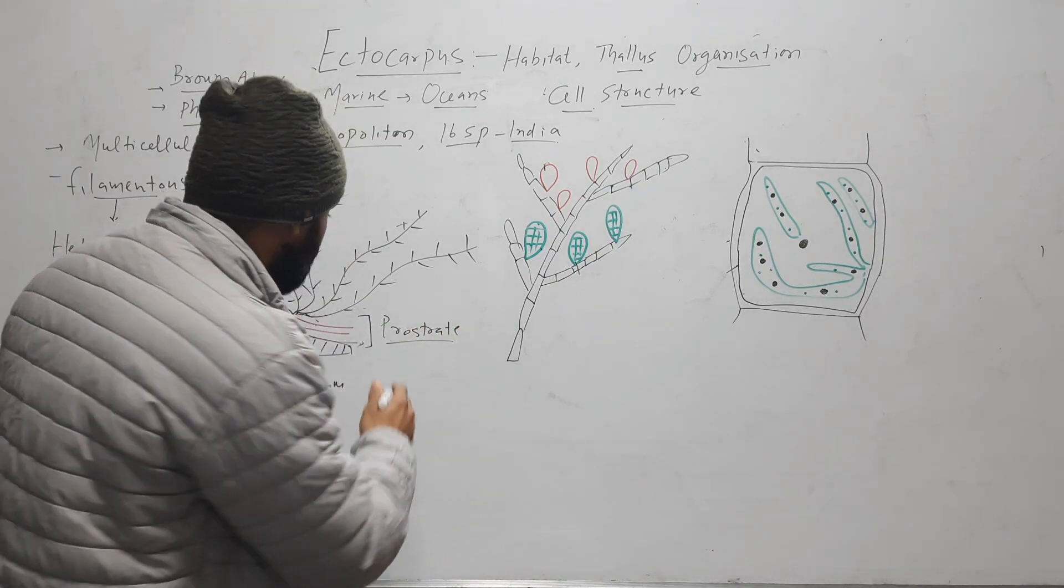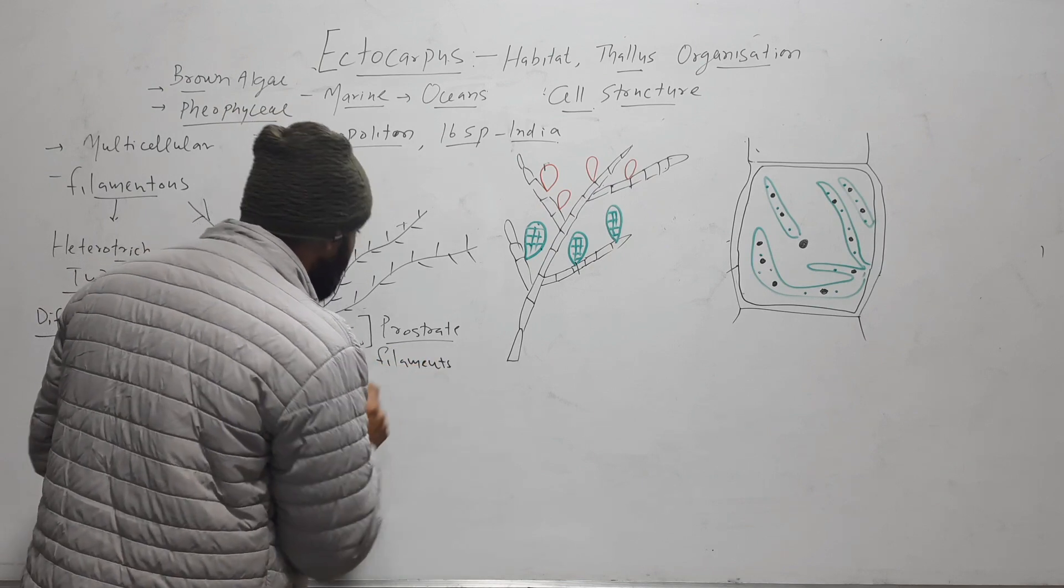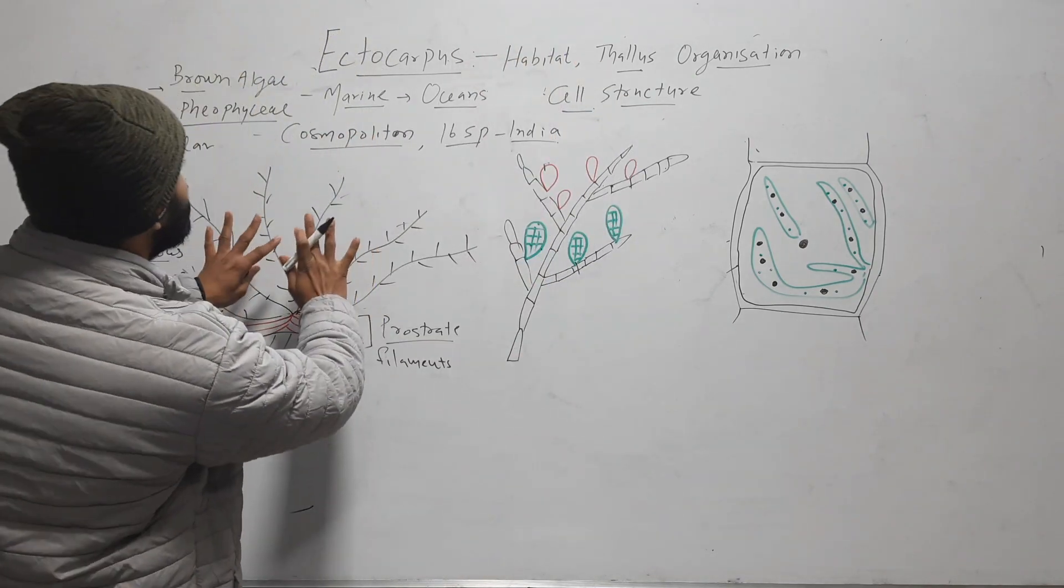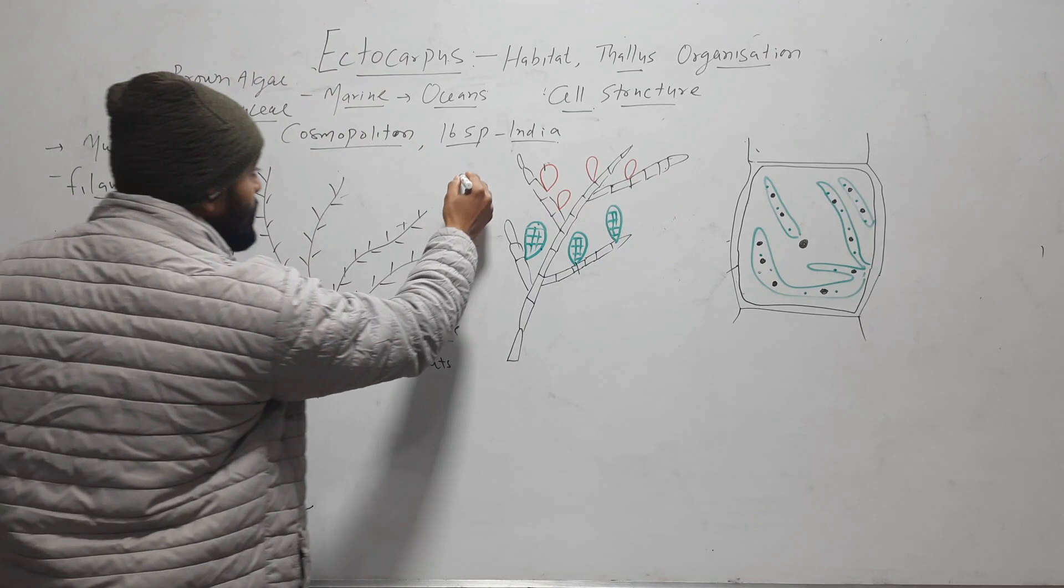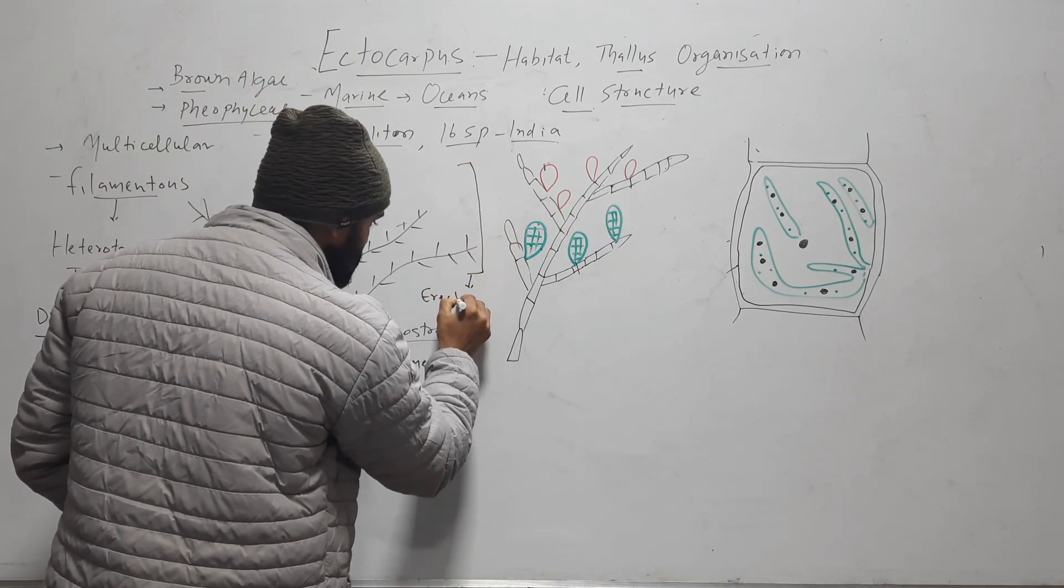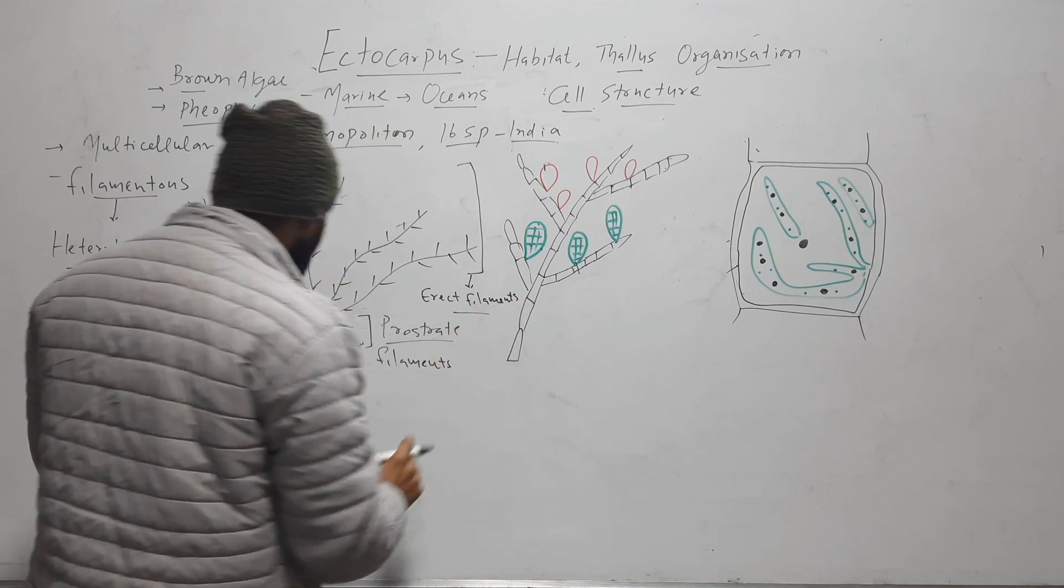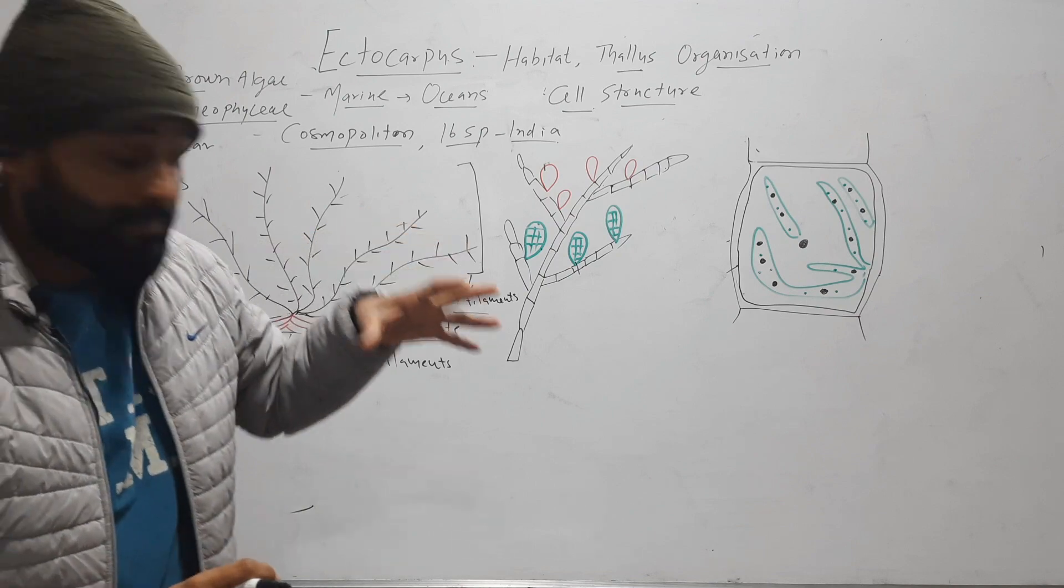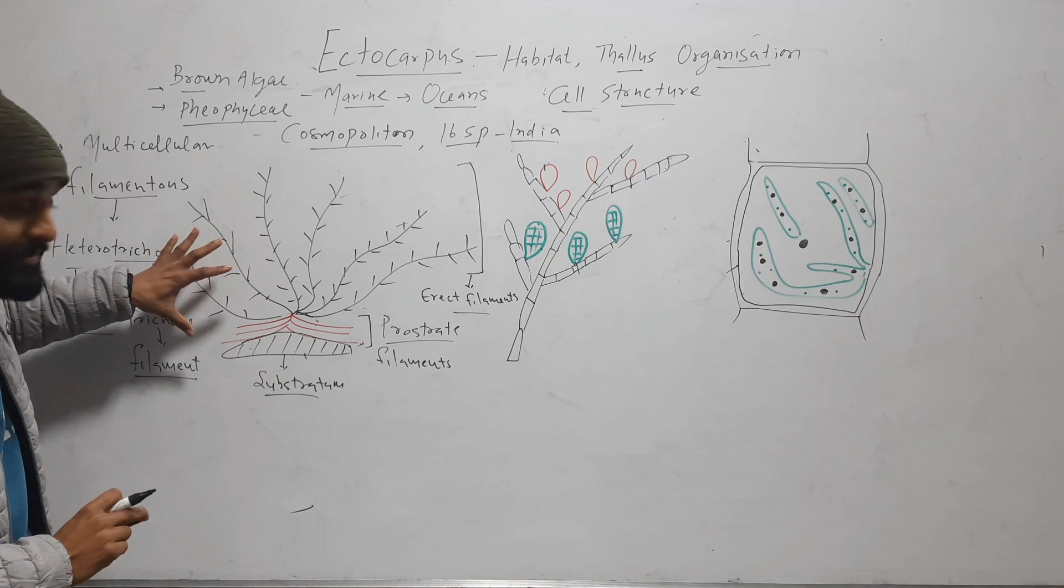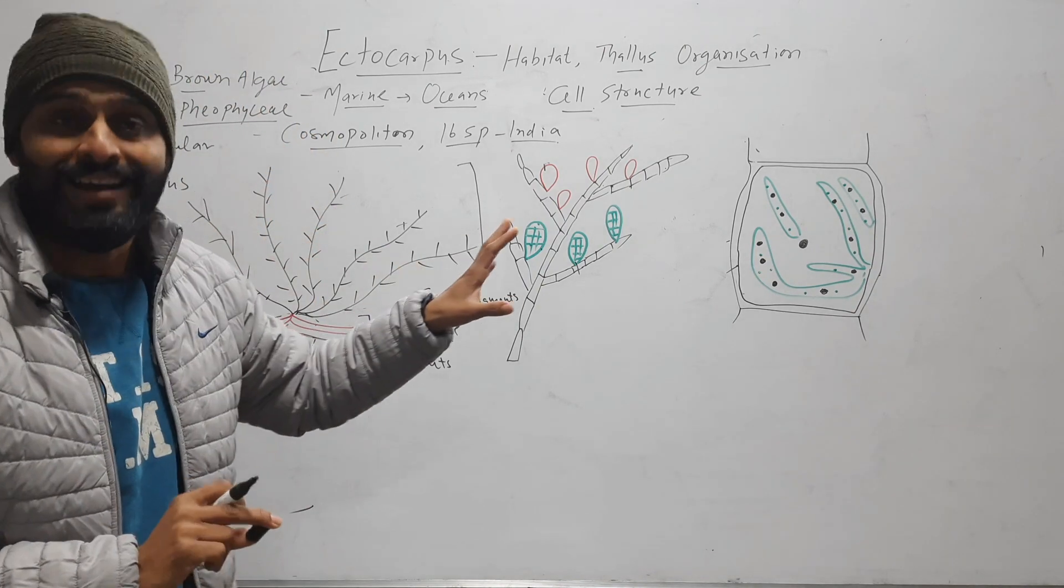And another filament, that are present erect or upward. These erect filaments are present toward upward. These prostrate filaments attach to the surface and provide anchorage to the thallus. And these erect filaments, they perform photosynthesis and reproduction.